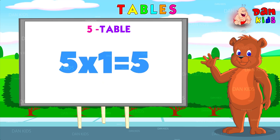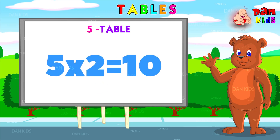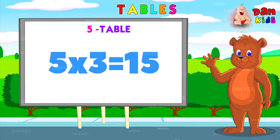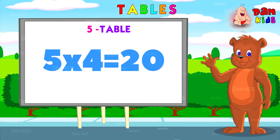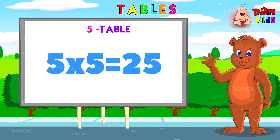Five ones are five. Five twos are ten. Five threes are fifteen. Five fours is twenty. Five fives is twenty-five.